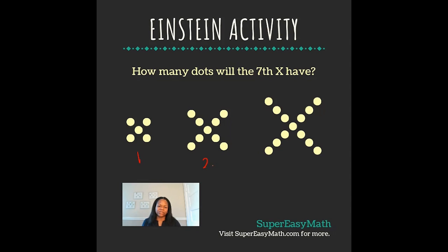So this is our first, this is our second, this is our third. And if the pattern were to continue, by the time we got to the seventh, how many dots would it have? Well, I'm going to take note of any patterns.